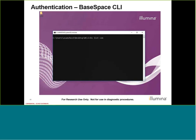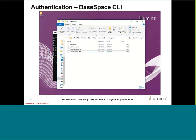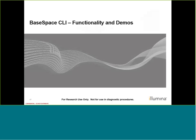For those that have several configs at the same time, we can type the command 'BS list config' and it shows all of the config files that I just authenticated in the previous demos. The default is going to be my personal space on the public domain, but I also have all these other workgroups that I authenticated. These config files are in my home directory in a hidden directory called '.basespace', and they just contain the access tokens — basically the authentication we just performed in order to access our accounts.